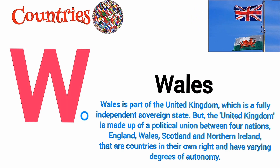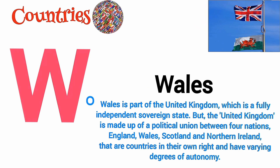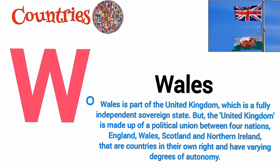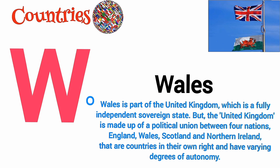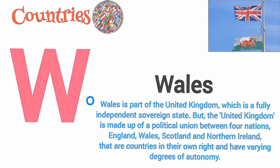W is for Wales. Wales is a part of the United Kingdom, which is a fully independent sovereign state. But the United Kingdom is made up of a political union between four nations: England, Wales, Scotland and Northern Ireland.